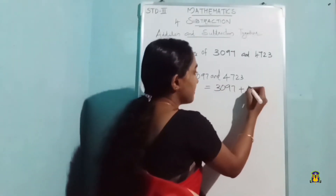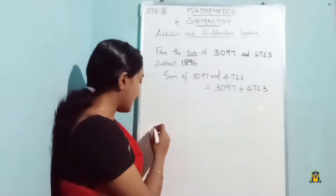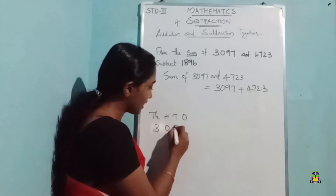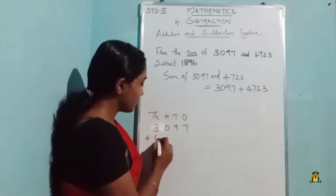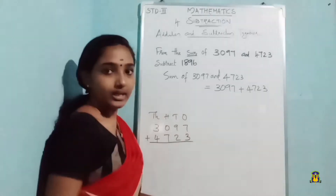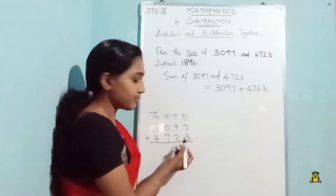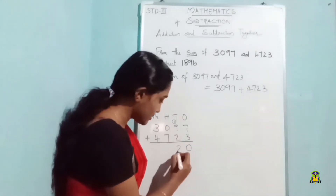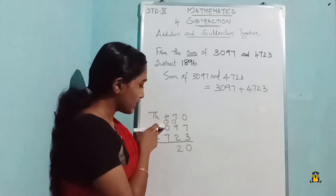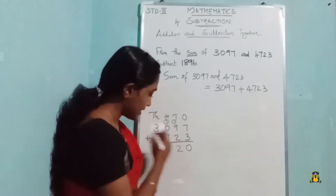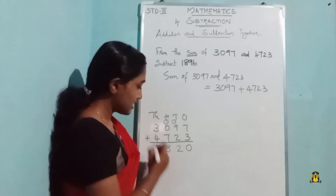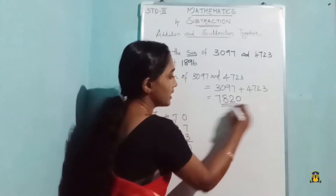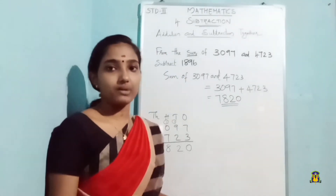We have to add these numbers. It's a four-digit addition: 3097 plus 4723. 7 plus 3 gives 10, writing 0 and carrying 1. 1 plus 9 gives 10, plus 2 gives 12, again carrying 1. 1 plus 0 gives 1, then 1 plus 7 gives 8, then 3 plus 4 gives 7. So we got the sum as 7820.